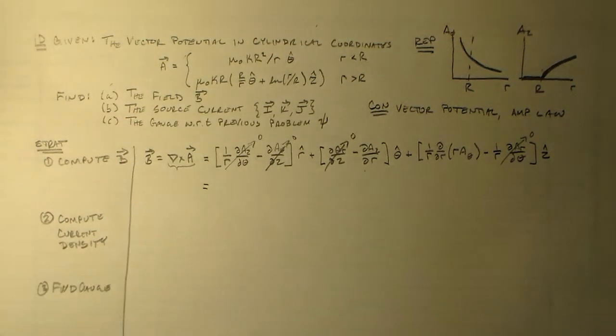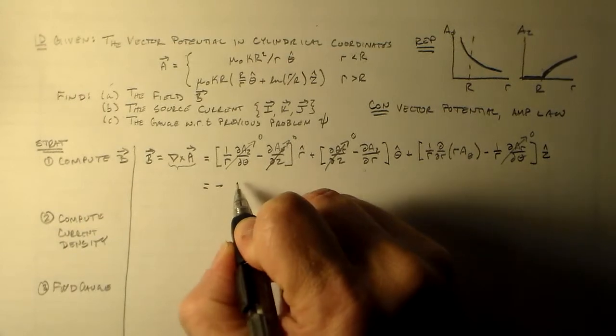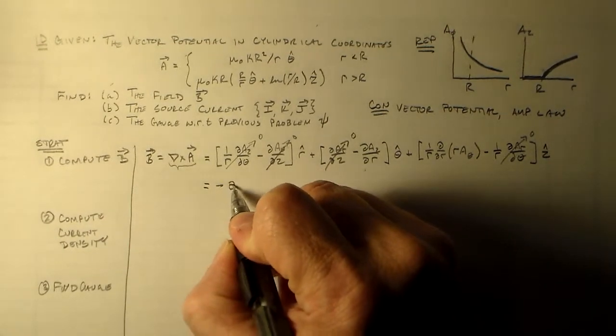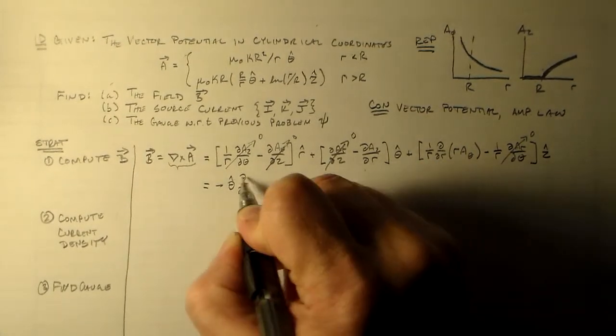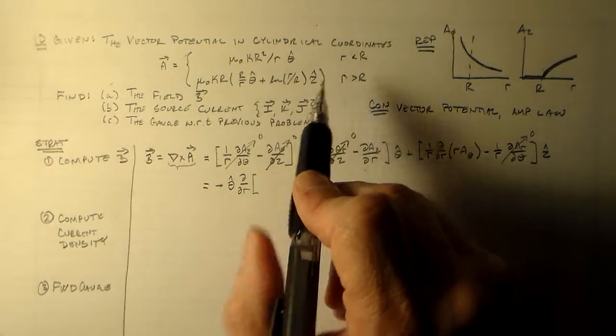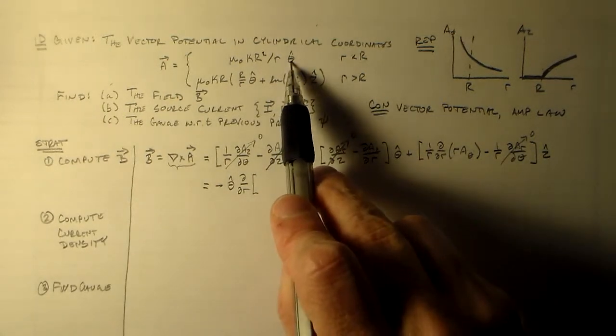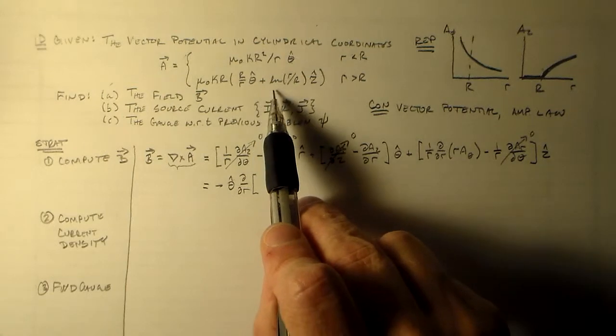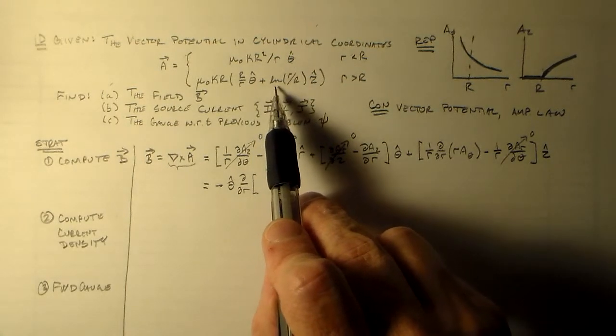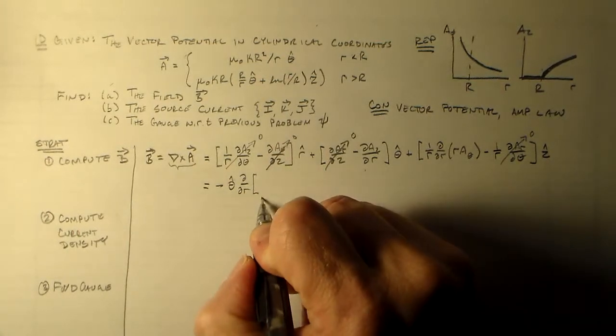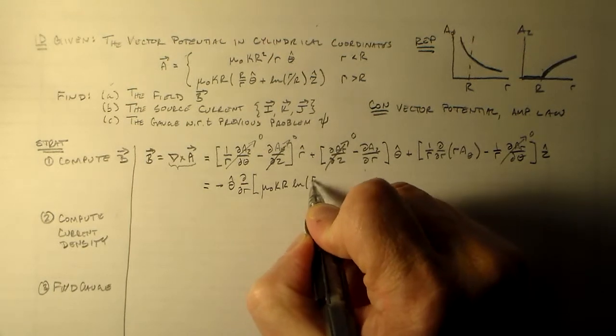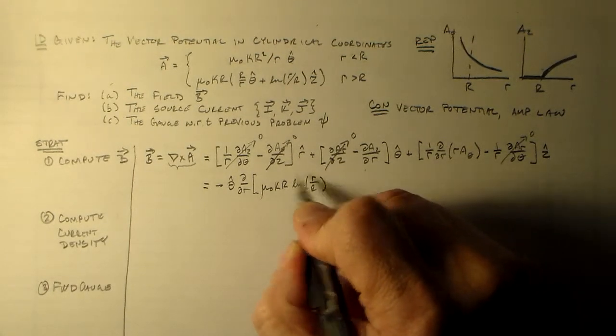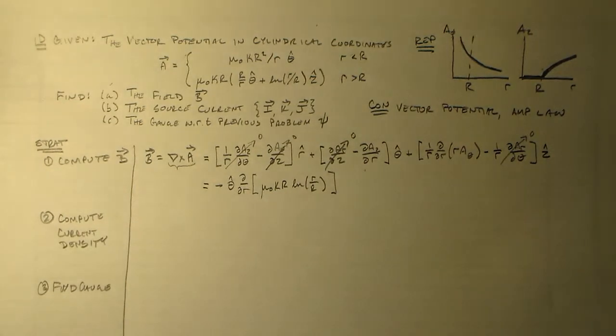So we have minus theta hat d dR of Az. Az equals zero inside and this function of the natural log on the outside. So on the inside it's just going to be zero, but we have this thing to differentiate.